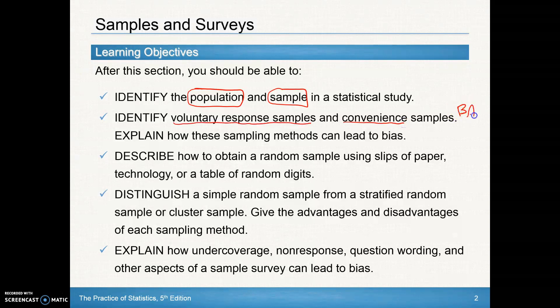I'll let you know ahead of time those are bad because they can lead to bias. We're also going to describe how to obtain a random sample using slips of paper, technology, so have your TI INSPIRE ready, or a table of random digits which is table D in the statistics formulas and charts.